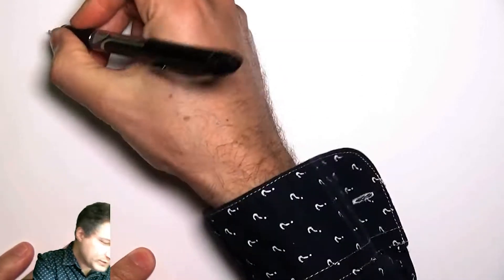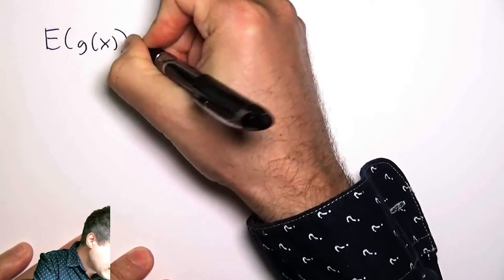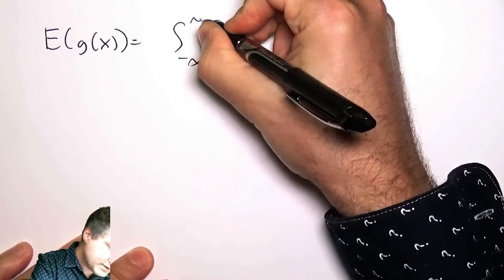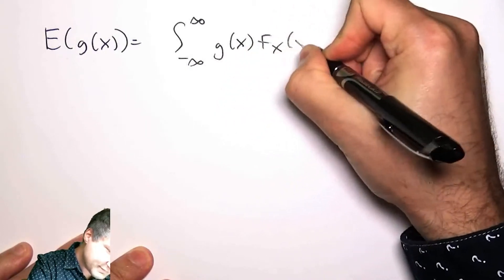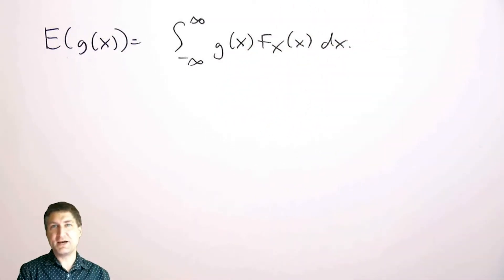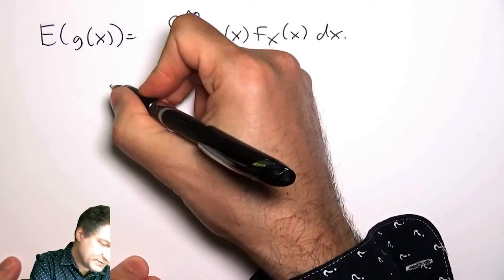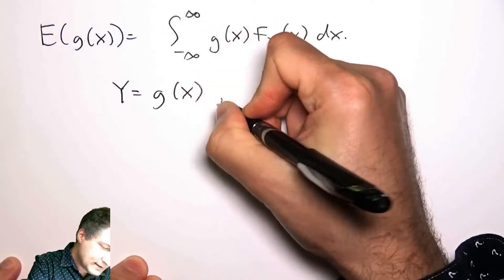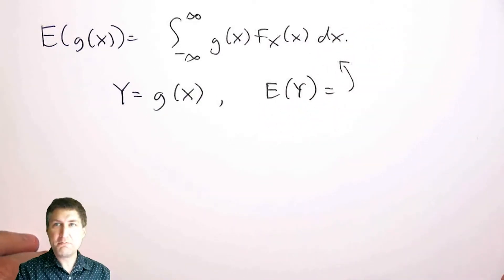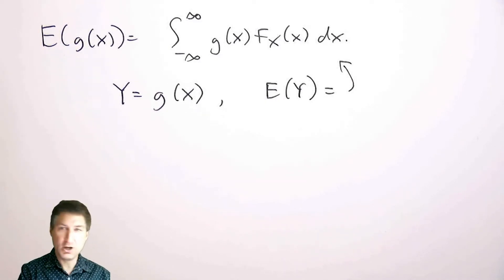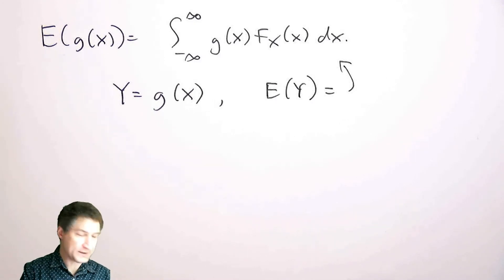We talked about the expected value of a function of a random variable. If I want to compute this number, it's just the integral of the function against the PDF of X. We can think of this as defining a new random variable Y and computing its expected value. But just knowing the expected value is not enough to characterize the entire random variable — suppose I want to know the PDF or CDF of this new random variable Y.